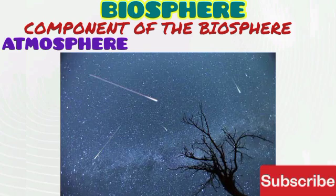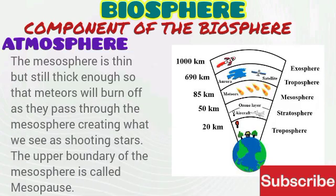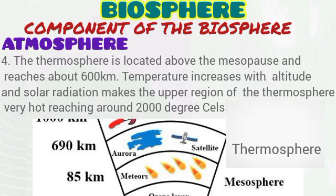The upper boundary of the mesosphere is called the mesopause, and the next layer is the thermosphere. The thermosphere is located above the mesopause and reaches about 600 km. Temperature increases with altitude in the thermosphere, and solar radiation makes the upper region of the thermosphere very hot, reaching about 2000 degrees Celsius.